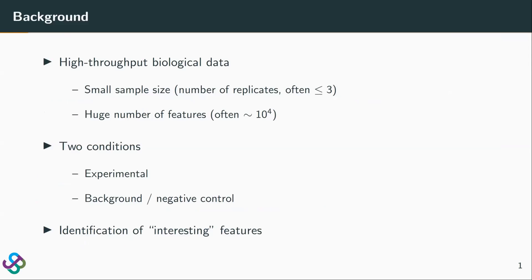Clipper handles high-throughput data which usually contain a small sample size, meaning a small number of replicates and a huge number of features. Clipper requires the data to have two conditions: one is the experimental condition of interest and the other is the background or negative control condition.